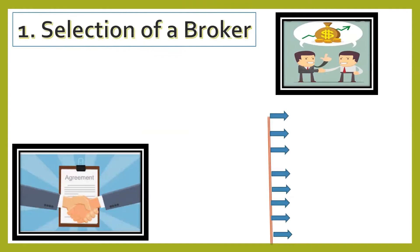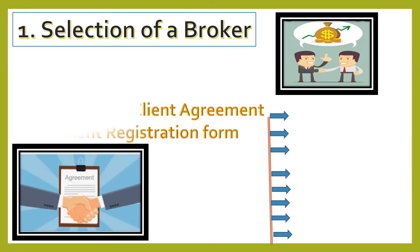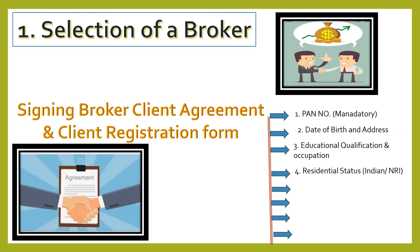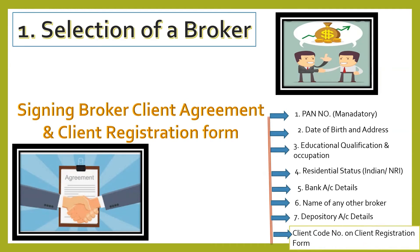The first step is the selection of a broker. Whenever an investor wants to invest or disinvest in the stock market, he has to first sign a broker-client agreement and client registration form. This form requires PAN number details, date of birth, address, educational qualification, occupation, residential status (NRI or Indian), bank details, name of any other broker he is registered with, depository account details, and client code number.